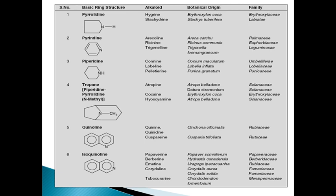The first class is pyrrolidine. Here you can see the five-membered ring — it is a five-membered heterocyclic ring having nitrogen. The example of alkaloid is hygrine and stachydrine. The botanical origin is Erythroxylon coca and Stachys, belonging to family Erythroxylaceae.